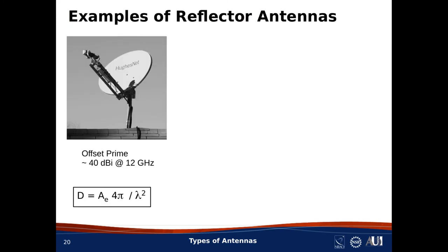A common satellite internet dish uses an offset prime focus design, where the feed is positioned off the paraboloid's axis of rotation to eliminate feed blockage. Directivity is estimated using the standard aperture antenna equation. A roughly one-meter diameter dish operating at ~12 GHz, accounting for losses, yields on the order of 40 dBi gain — much greater than any antenna discussed so far.